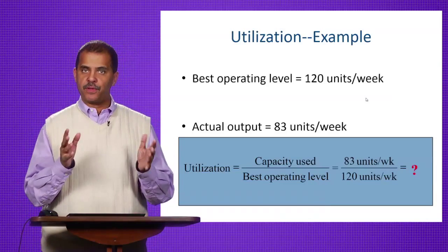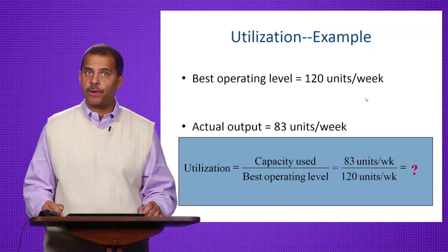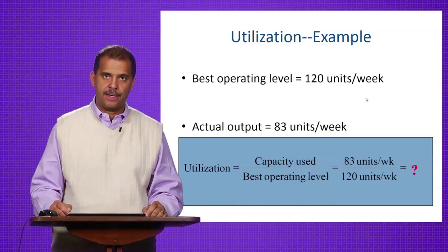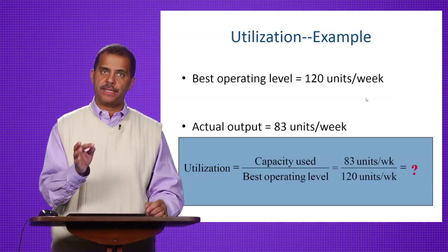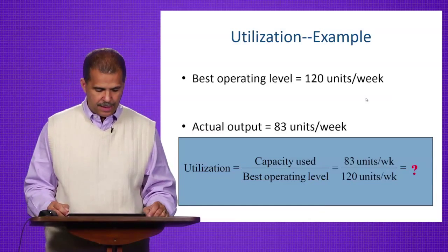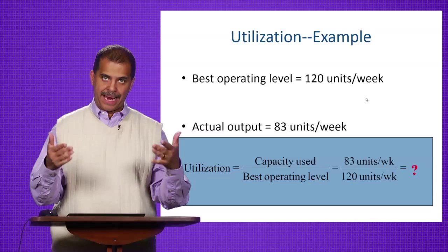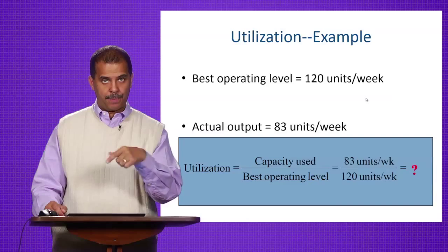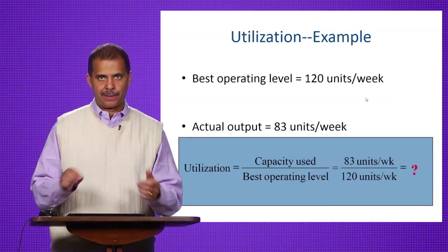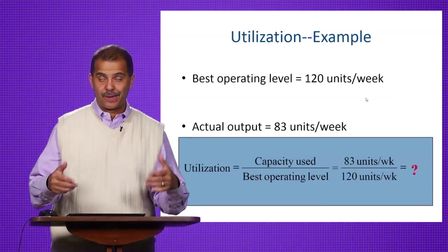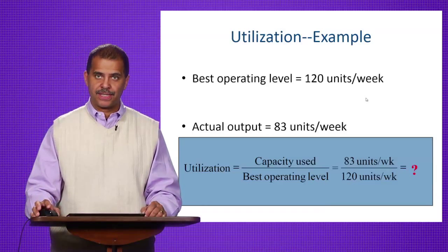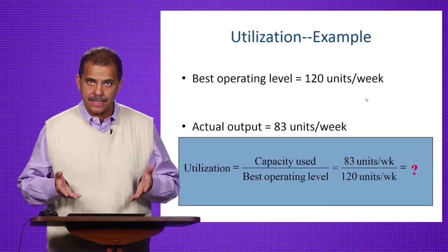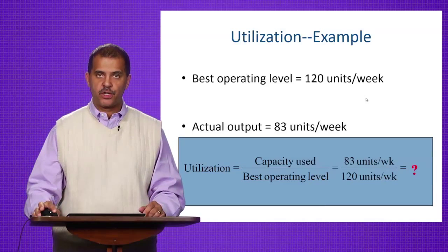Let's look at an example of utilization. Say your best operating level is set at 120 units a week, and your actual measured output is 83 units a week. Using the formula — capacity used divided by best operating level — you get 83 divided by 120, which is clearly less than 100%. What that means is you have some capacity that you are not yet utilizing.